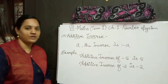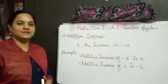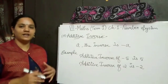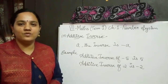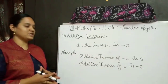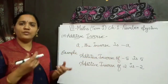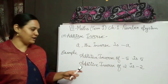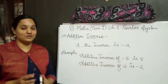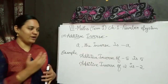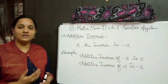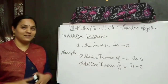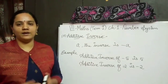The last property is additive inverse. For any number a, the inverse is minus a. For any positive number we have a negative number as its inverse, and for a negative number, the positive number is the inverse. Listen carefully children — for a, the inverse is minus a; so for minus a, the inverse is plus a. Additive inverse of minus 5 is plus 5, and vice versa. Likewise, additive inverse of 2 is minus 2, and additive inverse of minus 2 is 2. I think you all have clearly understood the concept.